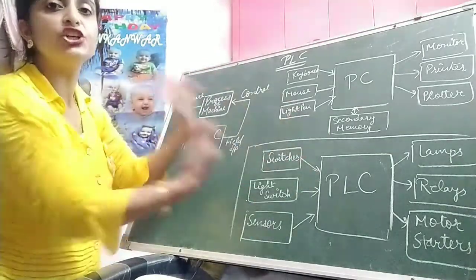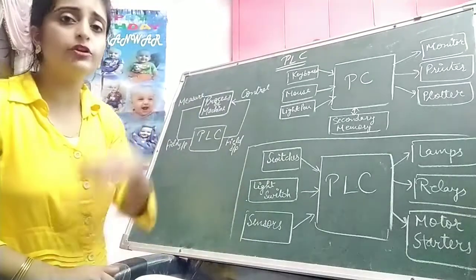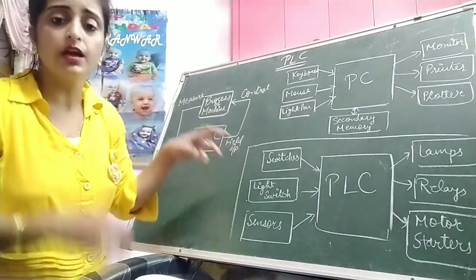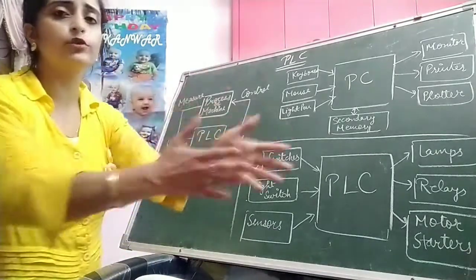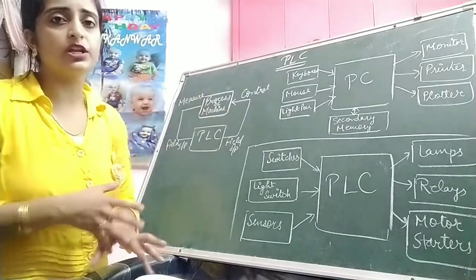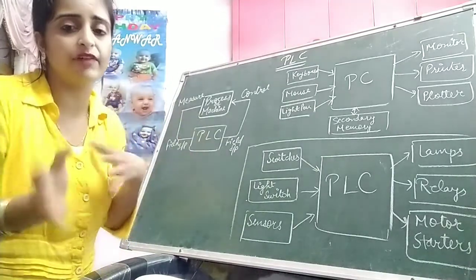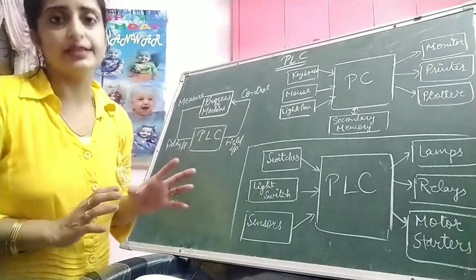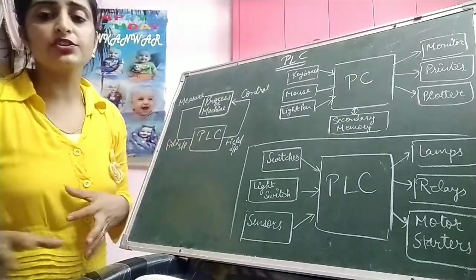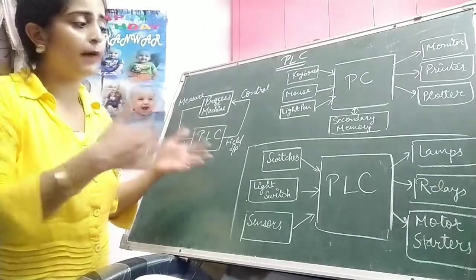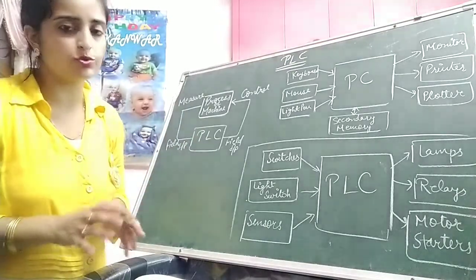We can use switches, limit switches, light switches, push buttons, lamp indicators, and relays — anything as an input or output. We could use any combination in the PLC. There are numerous additional input and output devices that can be used. Most input-output devices transfer a large amount of data, and one byte or more than one byte of data length devices could be used.